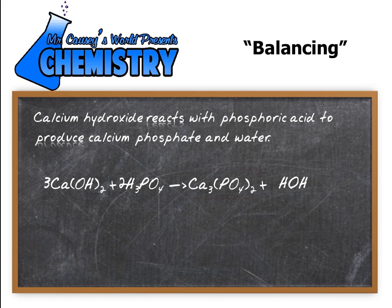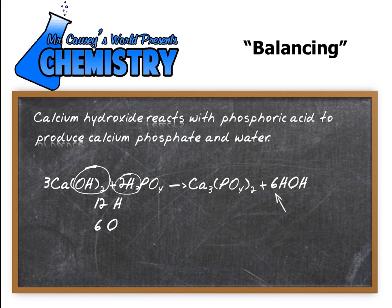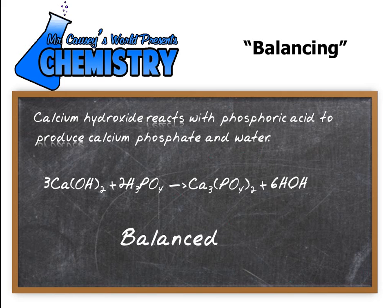Now notice we have two times three — that's six hydrogens on the left from Ca(OH)₂. Over here we also have two times three, six hydrogens, and six oxygens from the phosphoric acid side. So we have twelve hydrogens and six oxygens to balance out. It just so happens that water allows us to do that if we put a six in front of it. Now if you look at everything, it's balanced. We've written and balanced the equation.